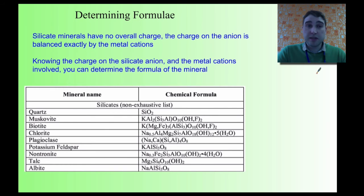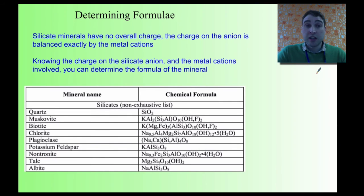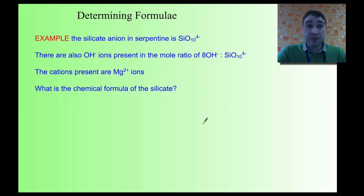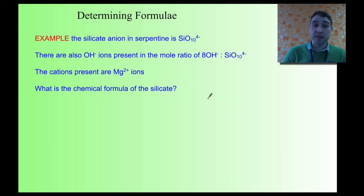By looking at these examples, we can see the silicate mineral overall has no charge. The charge on the aluminosilicate anion has to be balanced by metal cations or hydroxide ions. So if you know the charge of the silicate anion and the metal cations involved, you can determine the formula of the mineral. Here's an example question: the silicate anion in serpentine is Si4O10 with a charge of minus four. Hydroxide ions are present in a mole ratio of eight hydroxides to one silicate ion, and the cations present are magnesium ions.